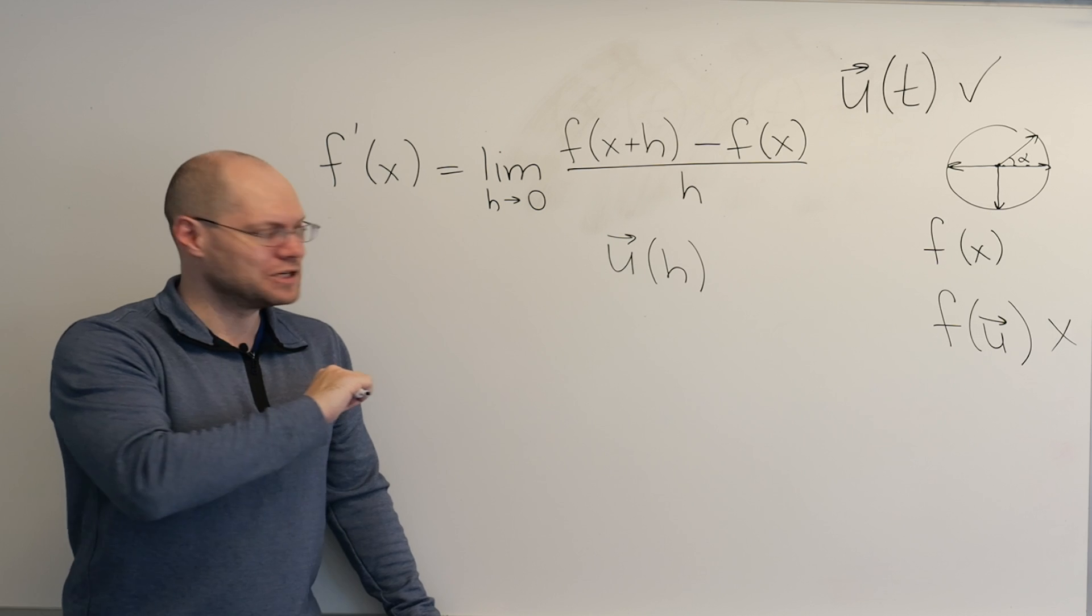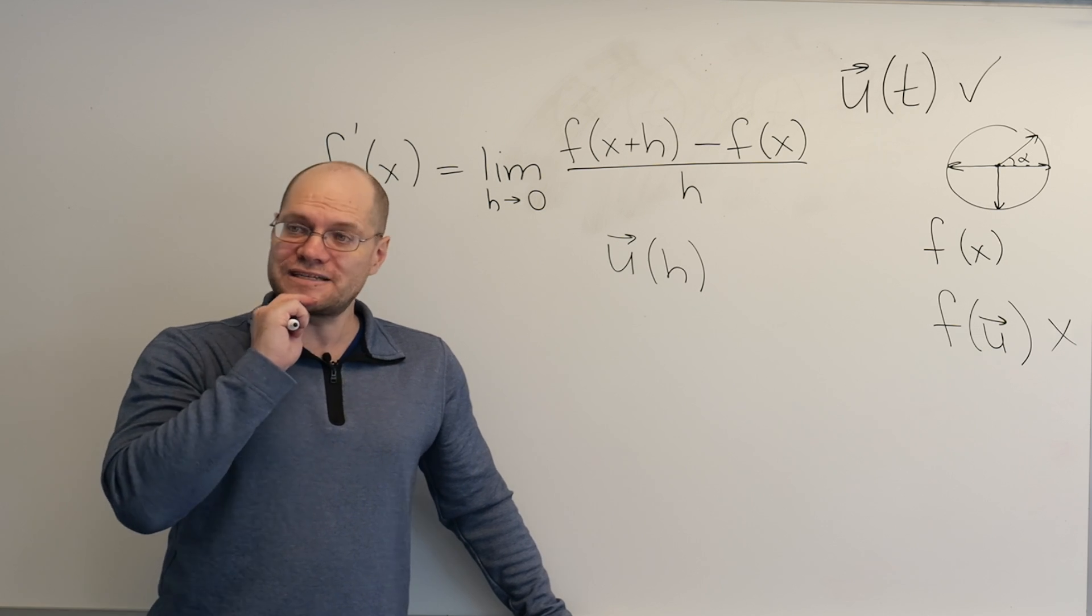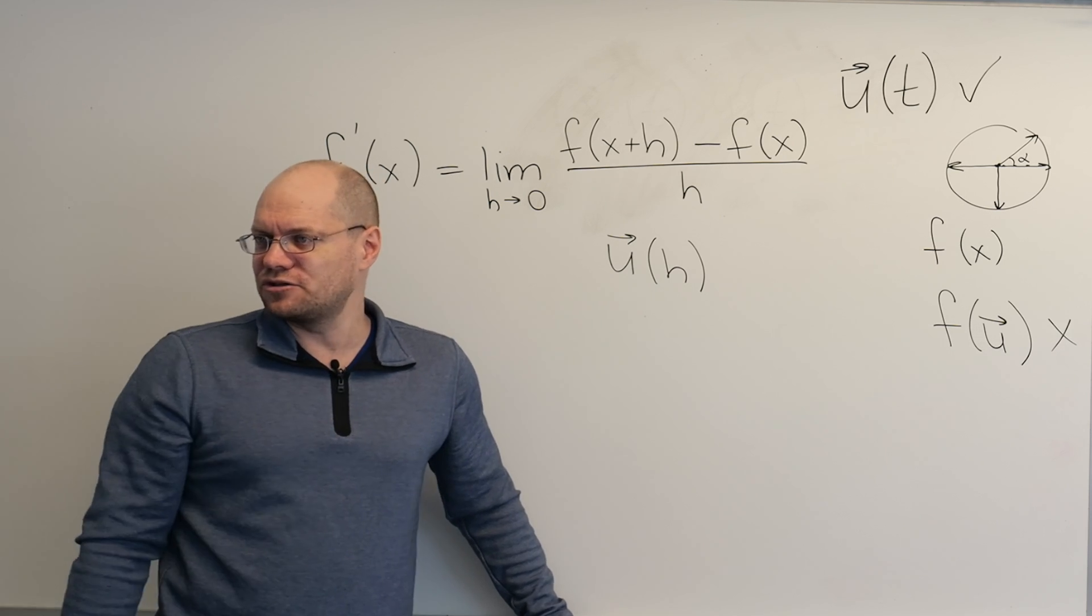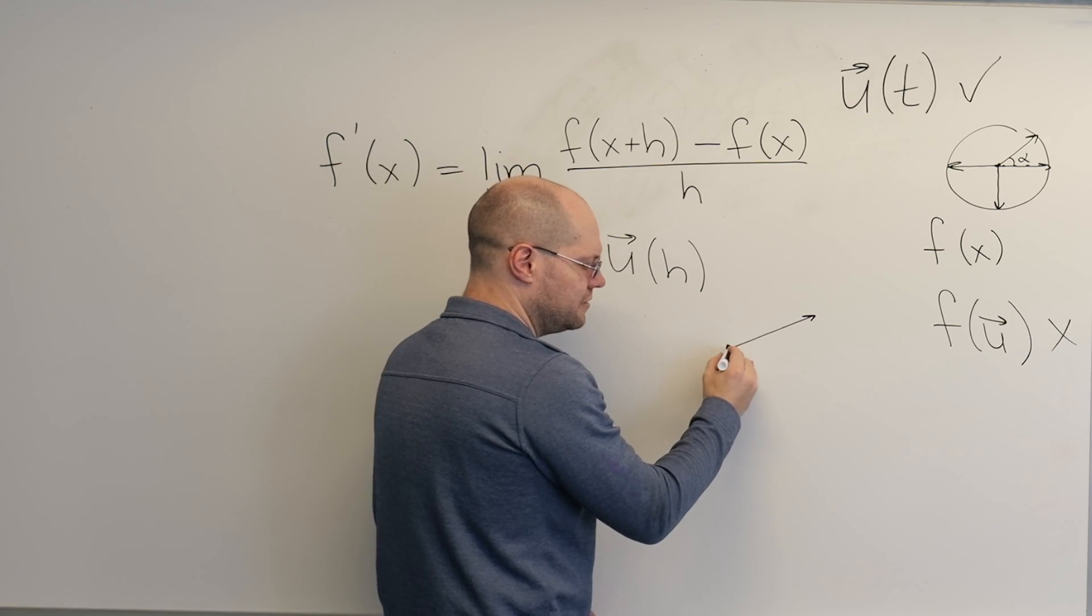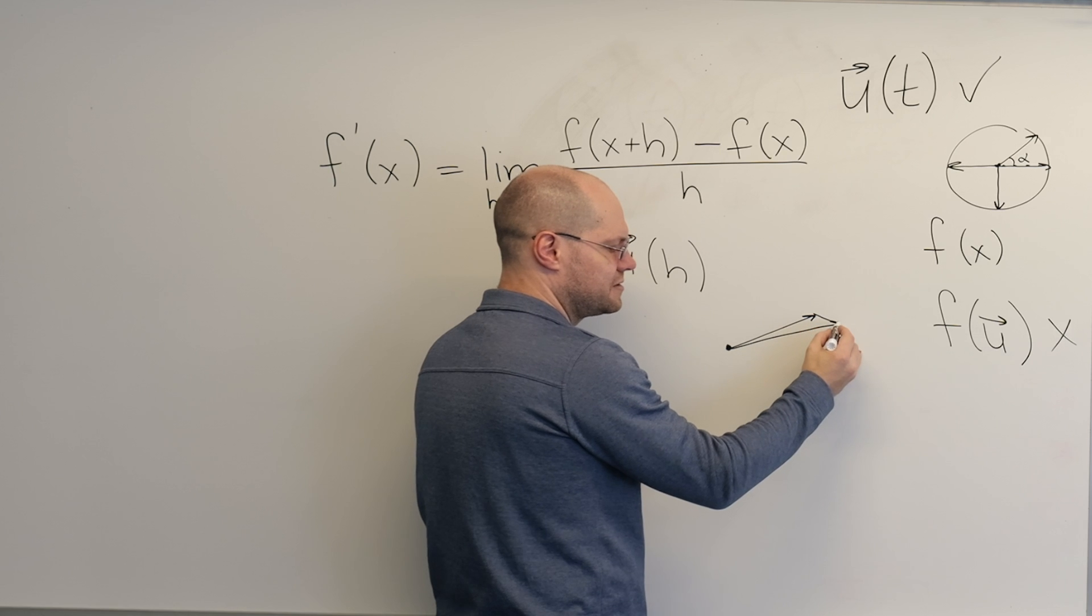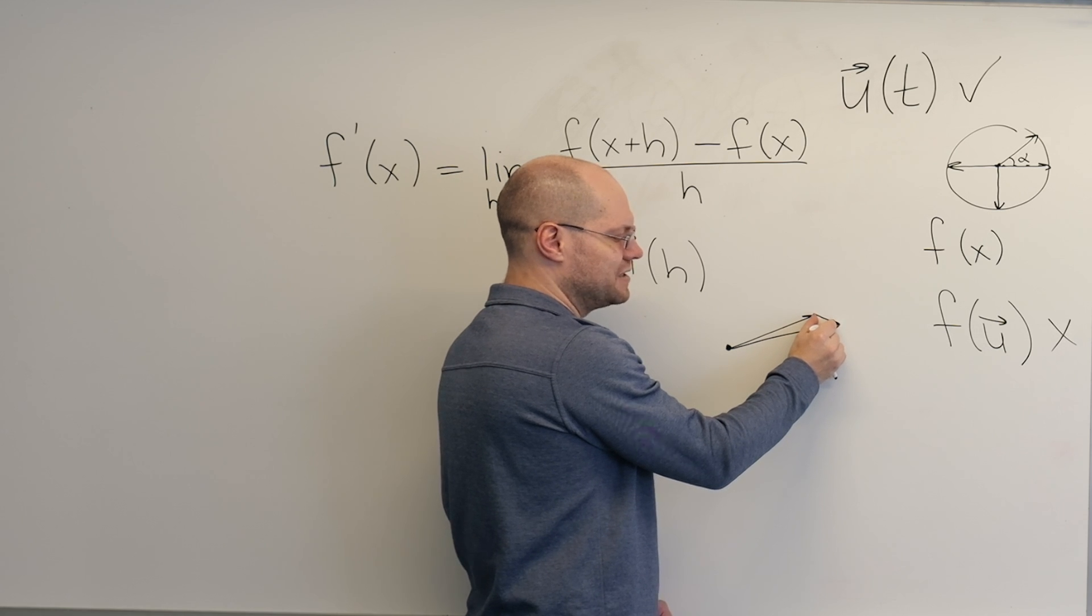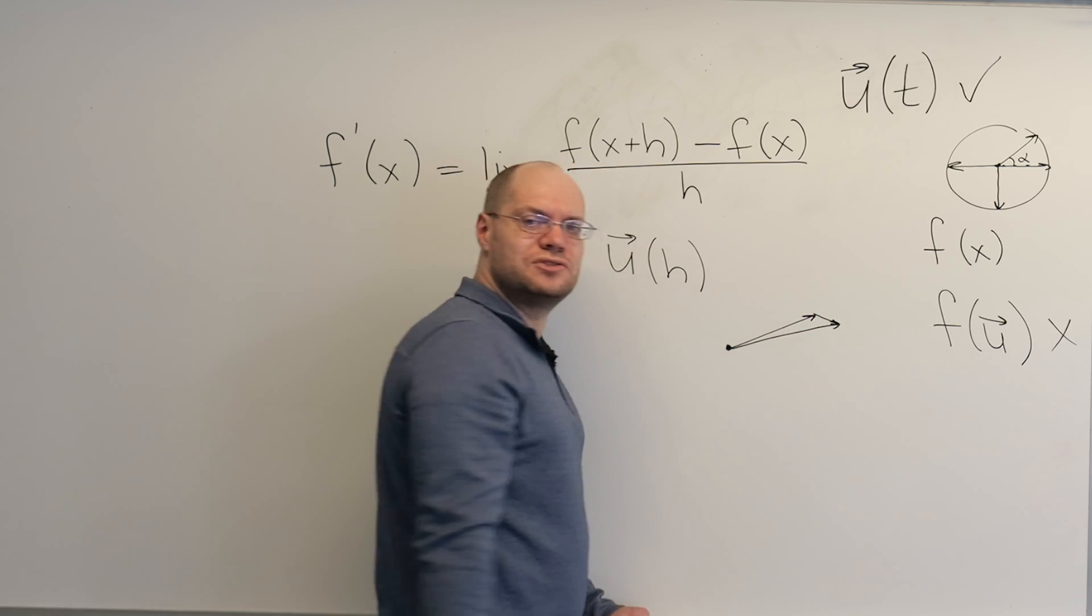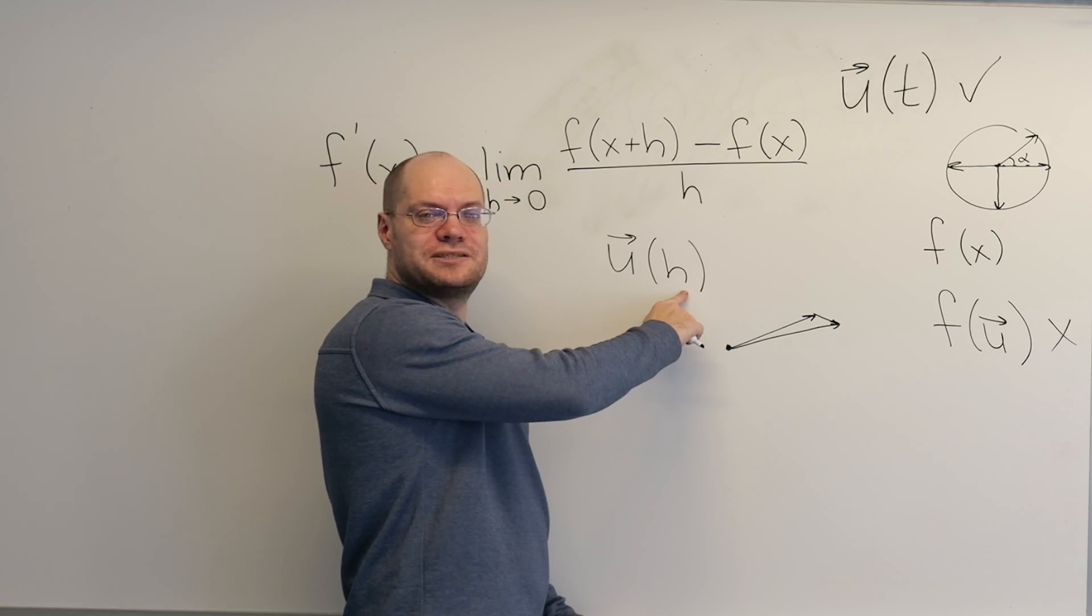Well, the intuitive idea of a limit is that you're getting closer and closer and closer to a particular value. So do vectors have the concept of closer and closer and closer? Like how would you say that these two vectors are close and these two vectors are not close? Well, it's the distance between their tips. So this vector and this vector are close. Why? Because their difference is very short.